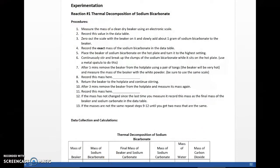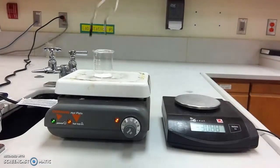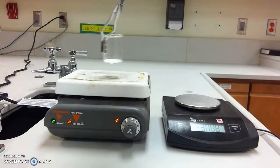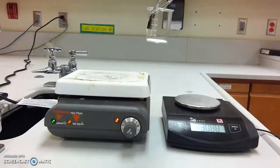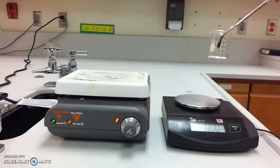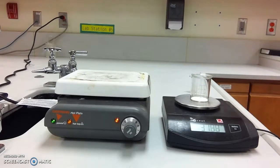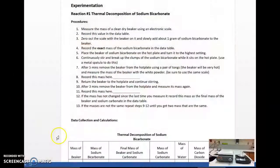All right, so it's been about five minutes, so now I want to go ahead and remove this from here. Notice I'm using a pair of tongs. I'm not going to use my fingers. It's going to be very, very hot. Zero out the balance and measure the mass of the beaker and the white powder inside. I'm going to record that mass right here in my procedures.